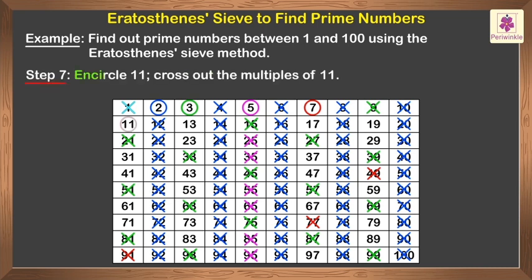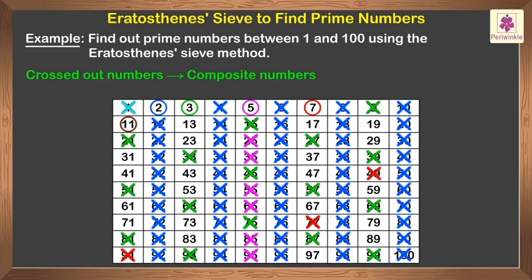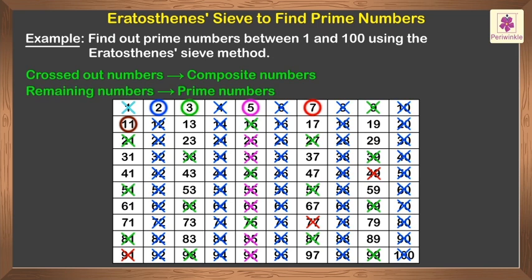Step 7: Encircle 11. Cross out the multiples of 11. Now look at the table. The numbers that we cross out are composite numbers, and the remaining numbers are prime numbers.